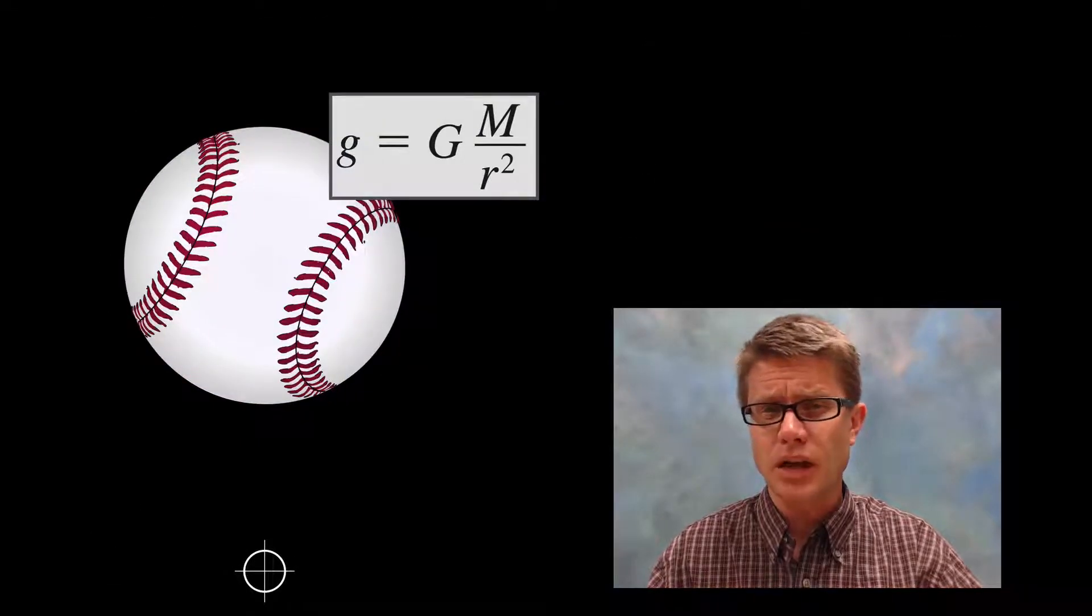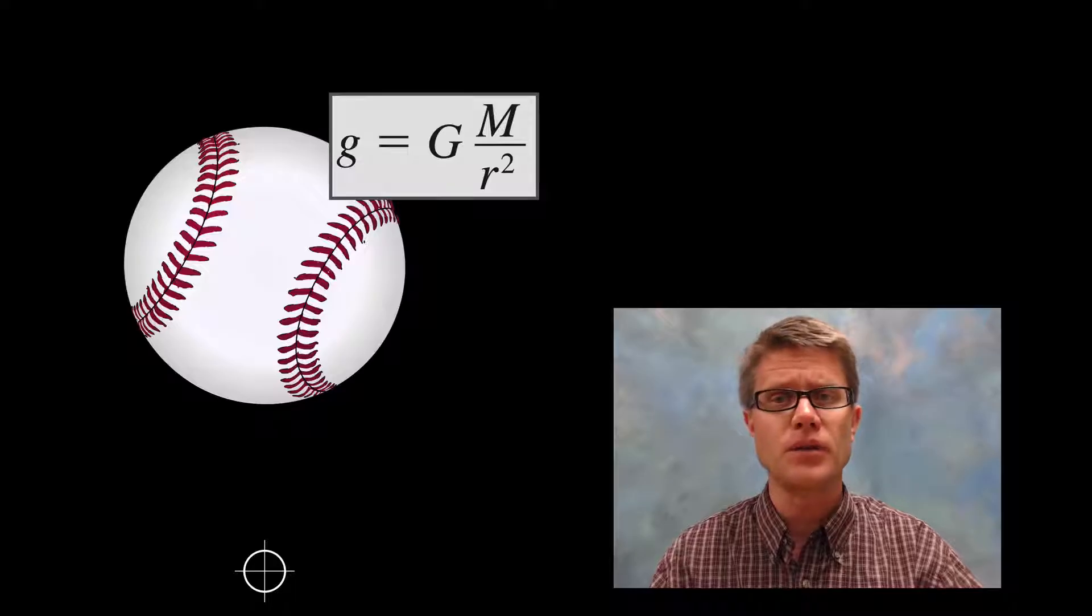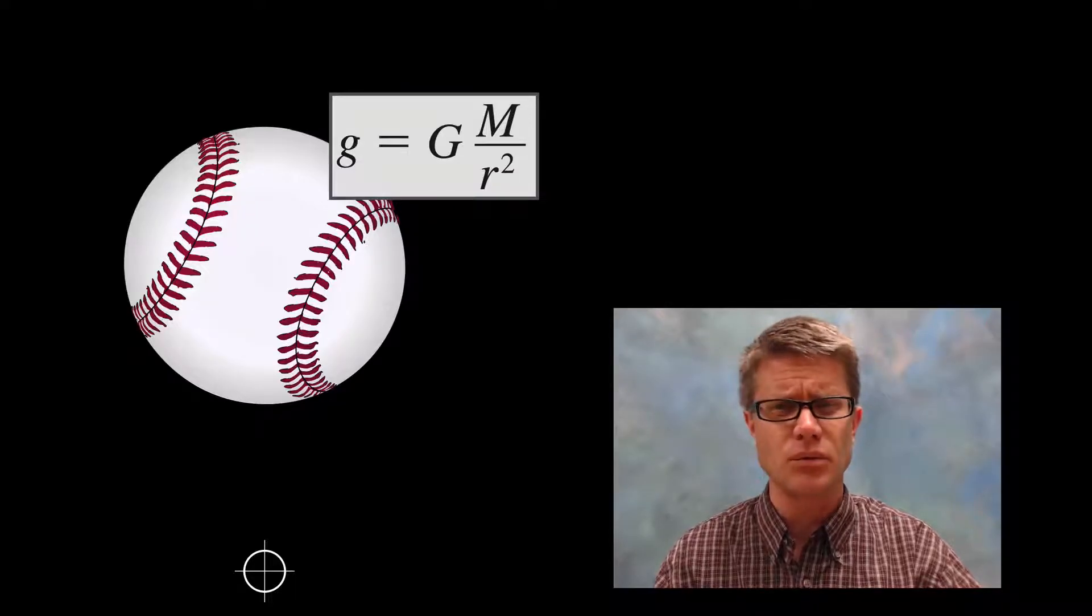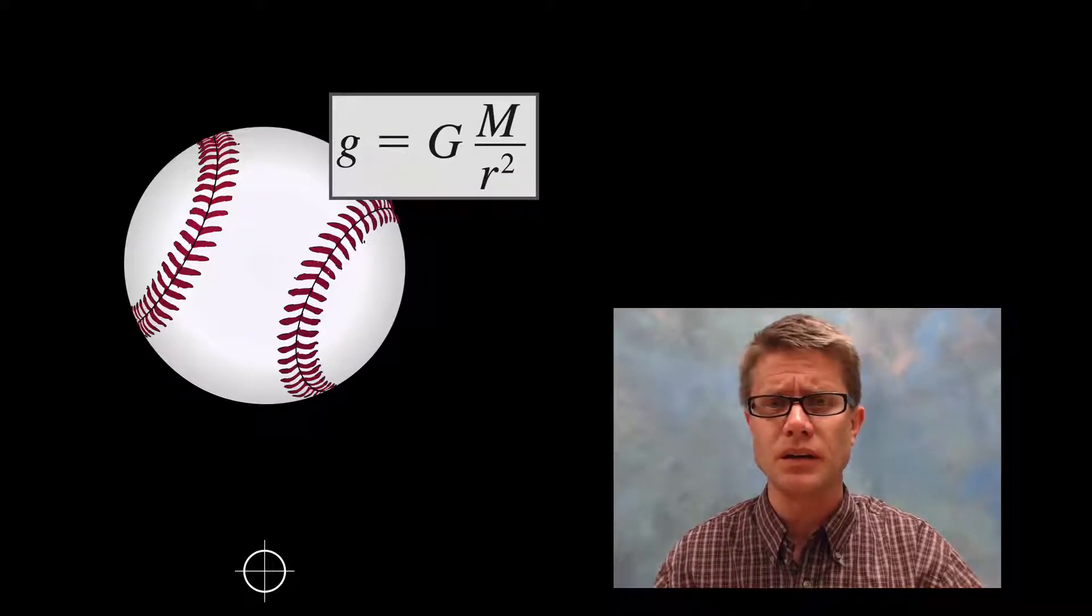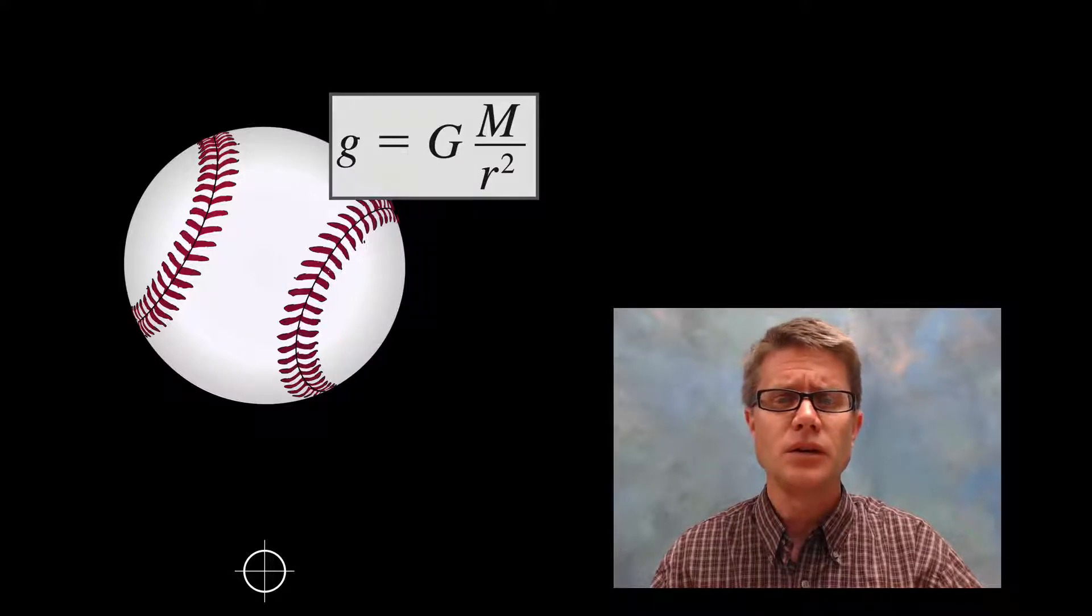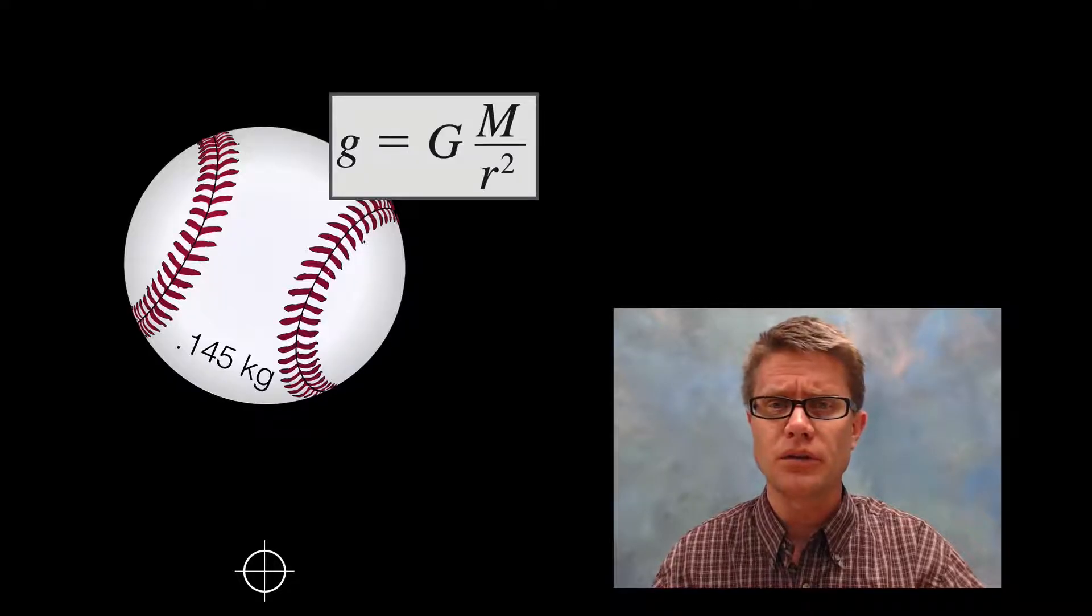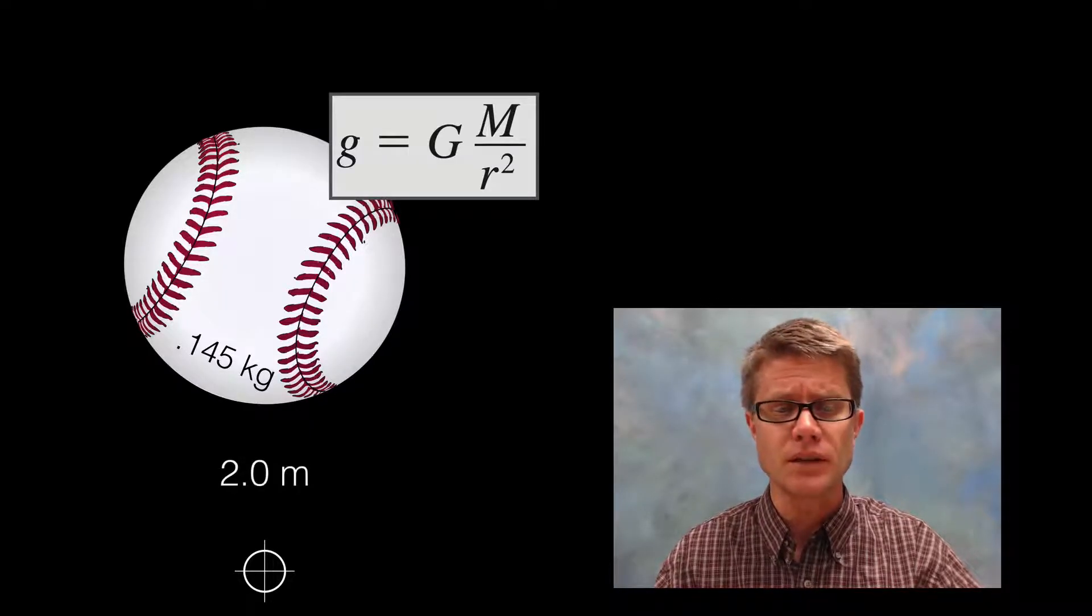Let me give you an example problem. Let's say I want you to figure out the gravitational field strength of a baseball. You could imagine it's going to be really small. There's not much mass in it. But if you want to solve this problem, I haven't given you enough information. You need to know the mass of that object: 0.145 kilograms. And you also have to know how far away is it: 2.0 meters.